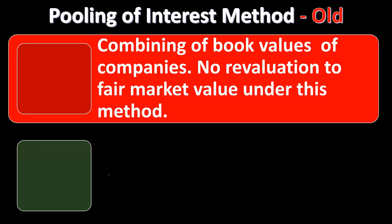Let's talk about the pooling of interest method. This is the old method that has been removed — we can no longer use it. The pooling of interest method involves combining the book values of companies with no revaluation to fair market value. Basically, if you're considering two separate legal entities that you need to merge, one way to think about it is you just take whatever the book values are and merge them together. That would be essentially the pooling of interest method.